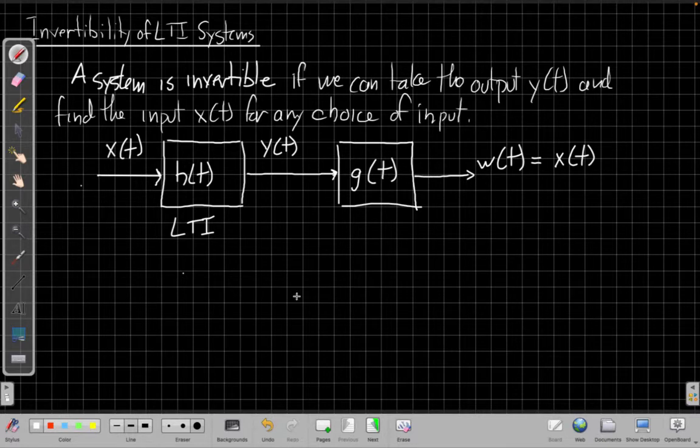And so if we think about what this means in terms of convolutions to get, start from x(t), process it with a system to get some output y(t), and then treat that y(t) as the impulse response to a new system with a different impulse response to get a new output and have that output be the same as the original input, right?